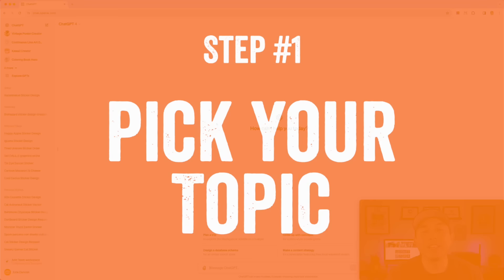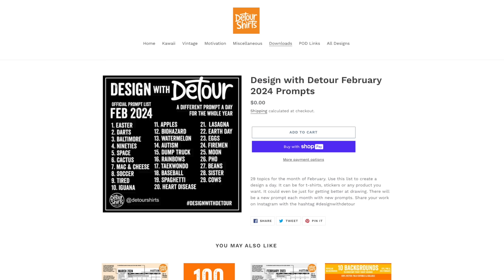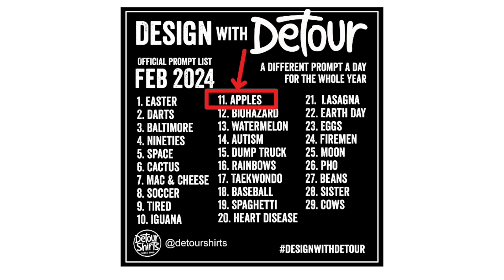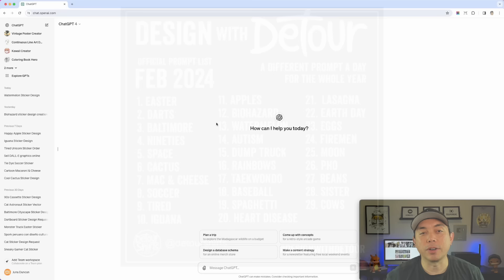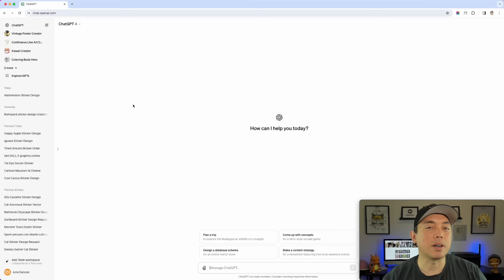Step one is actually picking your topic. With Design with Detour, I have prompts for every day, and one of the days I picked was Apple. This is the full list for February — I'm going to do one for every day of the year. You want to have that topic first before you come into ChatGPT and start typing randomly. This really helps you decide what you're going to be prompting.